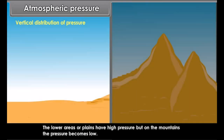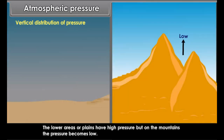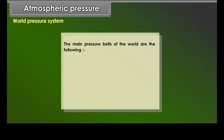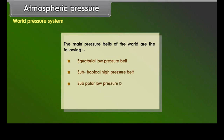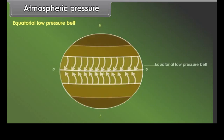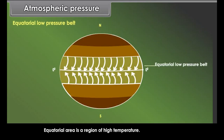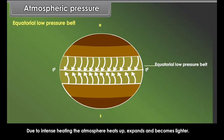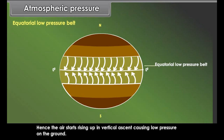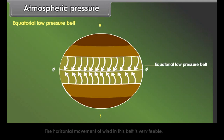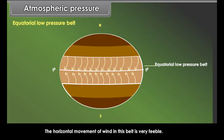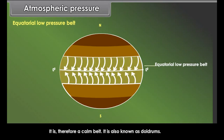Whenever there is an increase in the temperature of the air, it gets heated and expands in volume and becomes lighter. Due to less weight, the heated air rises up, causing low pressure. But at high altitude, the same air gets cooled and becomes heavier and thus it descends down, causing high pressure. Atmospheric pressure decreases with height. As we go up, the atmosphere becomes thinner and thinner, and its pressure also goes on decreasing. This is the reason why high pressure is found at the sea level due to dense atmosphere. The lower areas or plains have high pressure, but on the mountains, the pressure becomes low.